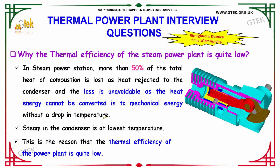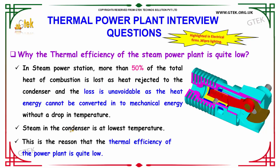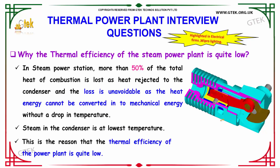We will move to the next question: why is the thermal efficiency of the steam power plant quite low? In terms of the steam power station, more than 50% of the total heat of combustion is lost as the heat rejected to the condenser, and this loss is unavoidable as heat energy cannot be converted into mechanical energy without a drop in temperature. Additionally, steam in the condenser is at the lowest temperature. This is the reason the thermal efficiency of the power plant is quite low.